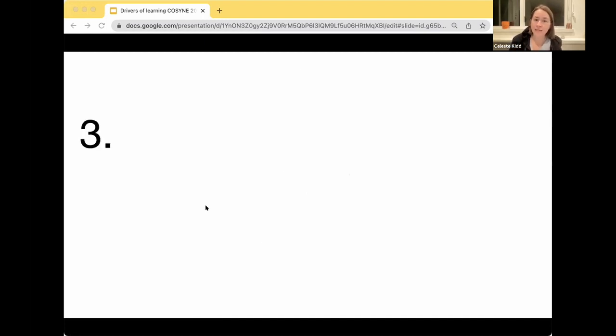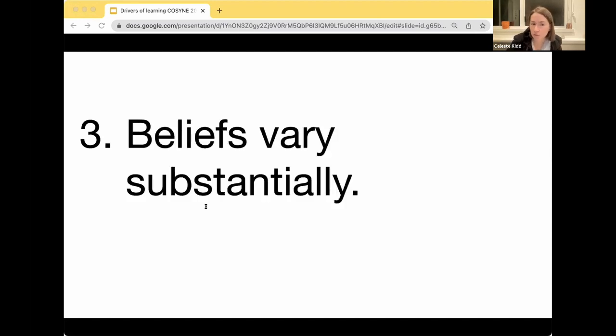The implication of that fact is my point three, which is that given how much variability in sampling from the world is going to arise from differences in the selection process, differences in what you had access to early on when you were making your early attentional selection decisions, even for common concepts, the result is that beliefs are going to vary substantially. And importantly, what I'm going to argue in this next section is that people are generally unaware of this variation.